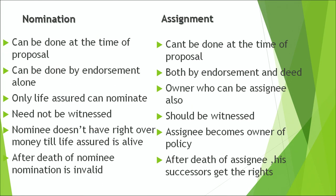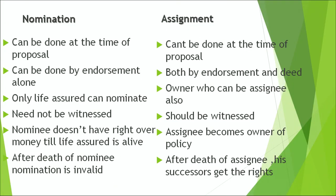Key differences between nomination and assignment: Nomination can be done at the time of proposal; assignment cannot — it must come at a later date. Nomination can be done by endorsement alone, but assignment requires both an endorsement and a stamped deed. In nomination, only the life assured can nominate; in assignment, the owner/proposer can assign. Nomination does not require a witness, but assignment requires a witness who must sign.